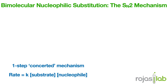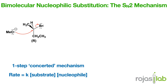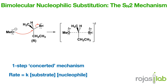Let's start with the classic SN2 mechanism. This is a one-step, concerted substitution mechanism. It's bimolecular, meaning that the rate depends on both substrate and nucleophile. It all begins with the nucleophile attacking the electrophilic carbon from the backside, and simultaneously, the leaving group departs. The transition state shows partial bonds to both the nucleophile and leaving group, resulting in an inversion of the stereochemical configuration. Typically, this reaction is favored by strong nucleophiles and polar aprotic solvents.